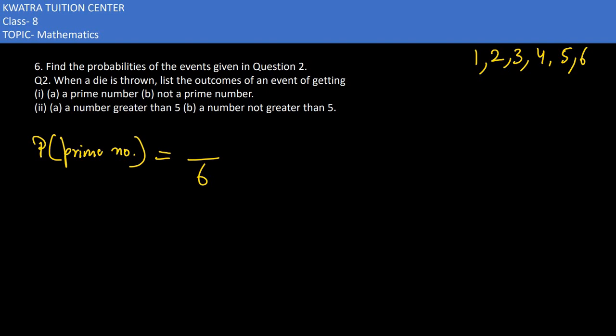Now here, the prime numbers are 2, 3, and 5. So how many prime numbers are there? 3. So the probability will be 3/6, which equals 1/2.